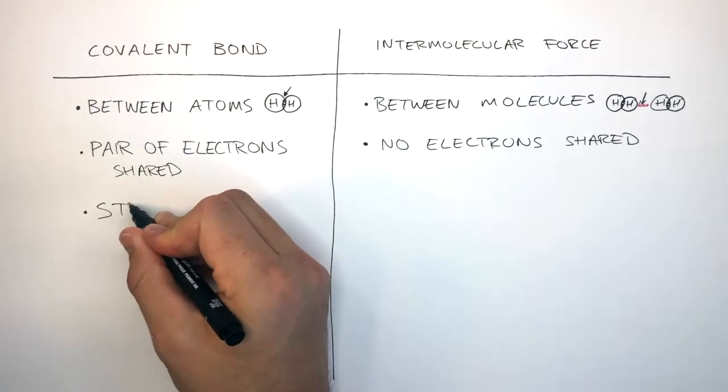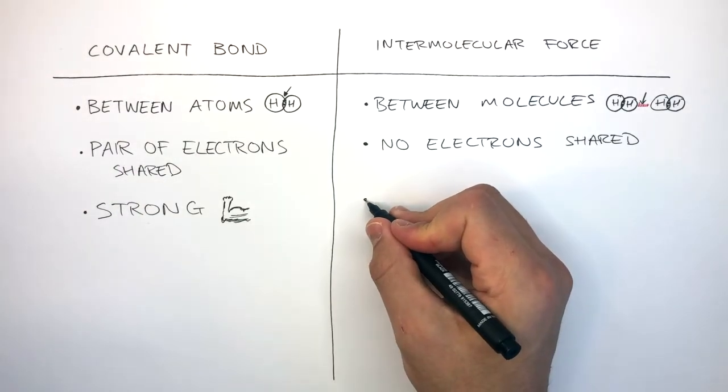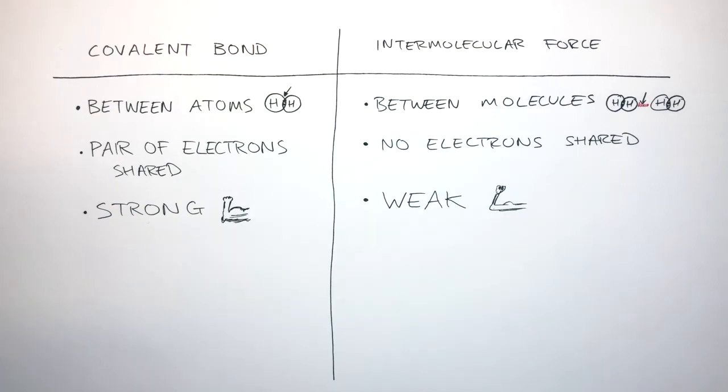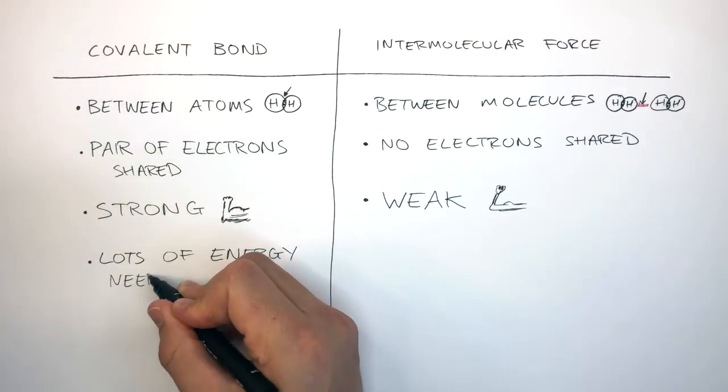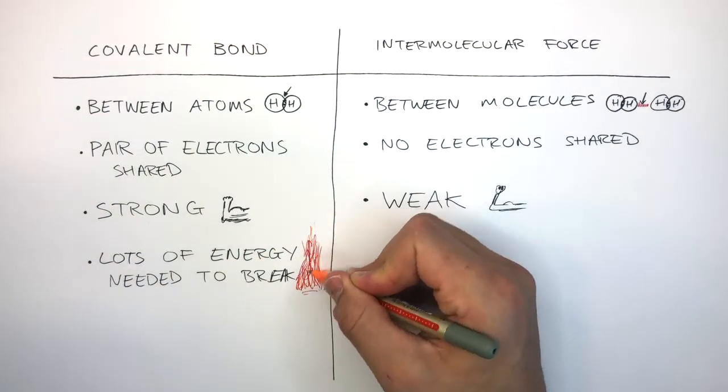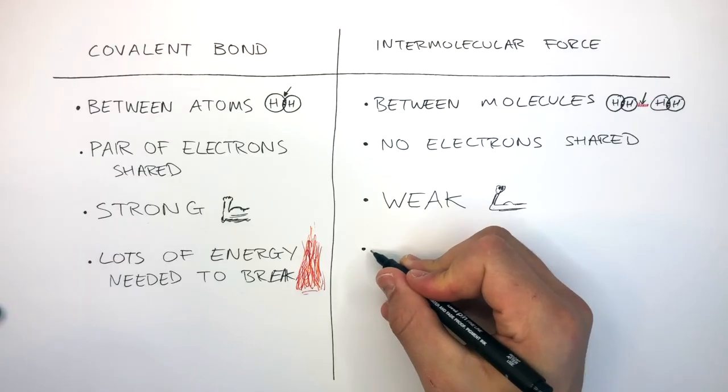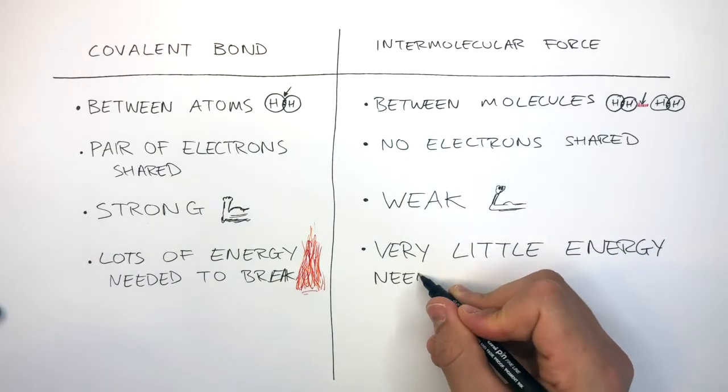Covalent bonds are strong and intermolecular forces are weak. Therefore, with covalent bonds, lots of energy is needed to break them. Whereas, with intermolecular forces, very little energy is needed to break them.